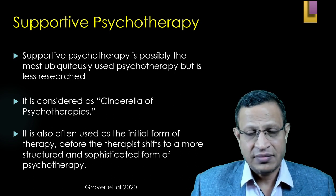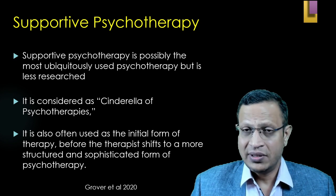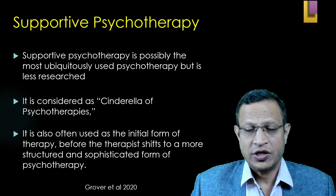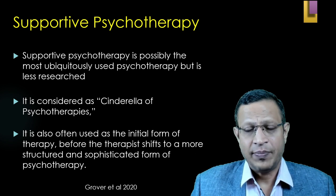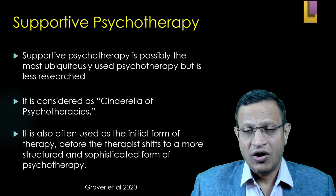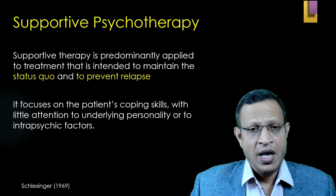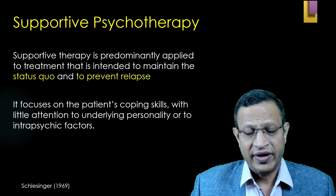Based upon the patient's resources, defense mechanisms, personality, and coping mechanisms, you may switch over to cognitive behavioral therapy, dialectical behavioral therapy, or exposure and response prevention. That means you start with supportive psychotherapy and later switch to a specific type. Supportive psychotherapy is predominantly applied for treatment intended to maintain the status quo or to prevent relapse.